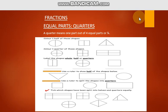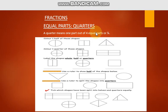The next topic is equal parts: quarters. Quarter means when you divide a shape or anything into four equal parts. A quarter means one part out of four equal parts, or one over four. When you divide anything into four equal parts and take only one part out of those four, we say that is the quarter of that shape. The fourth part is called a quarter.